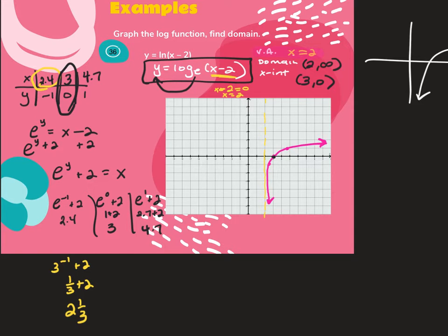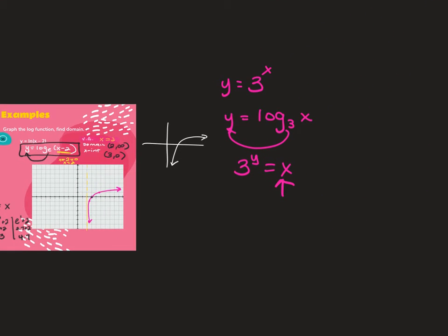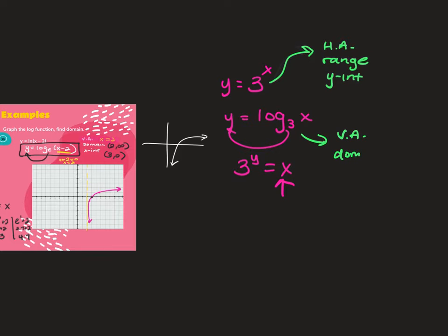To clarify: if it's exponential you find y-related info, but if it's log you find x-related info because you have to put it into exponential first. So an exponential graph will have a horizontal asymptote, a restriction on the range, and a y-intercept. A log graph has a vertical asymptote, a restriction on the domain, and an x-intercept.